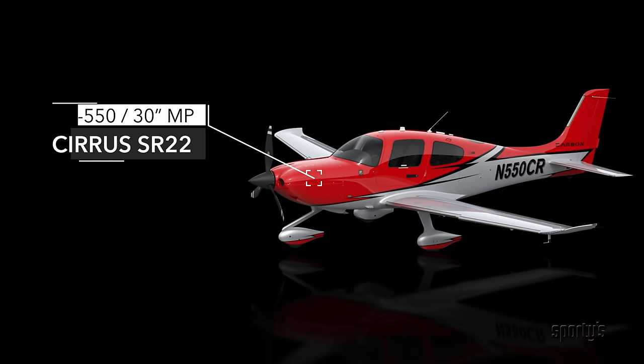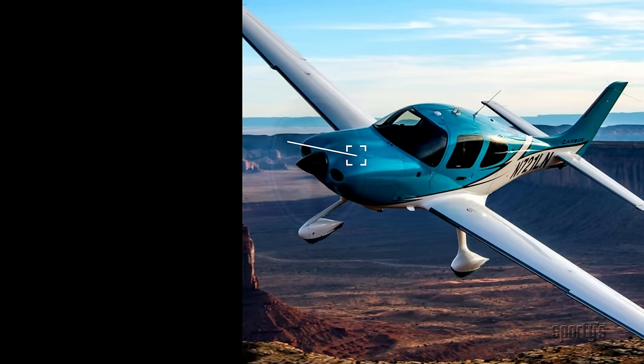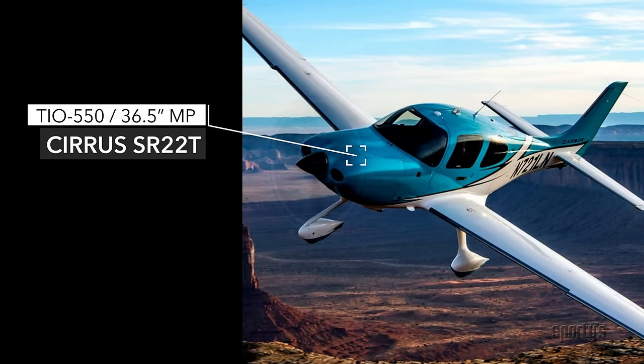For example, the naturally aspirated IO-550 engine in a Cirrus SR22 will produce a maximum of 30 inches of manifold pressure at sea level. Compare this to the turbocharged SR22T variant that will produce a sustained 36.5 inches of manifold pressure until 16,000 feet.